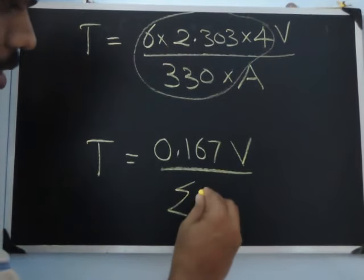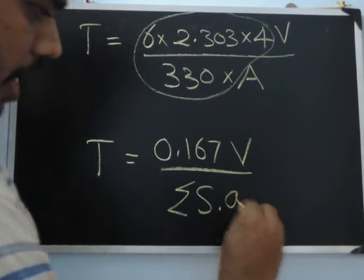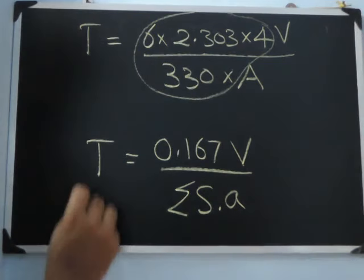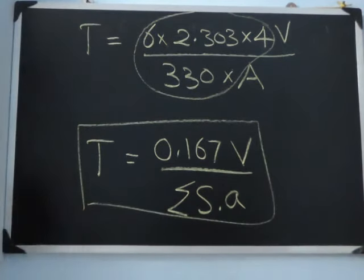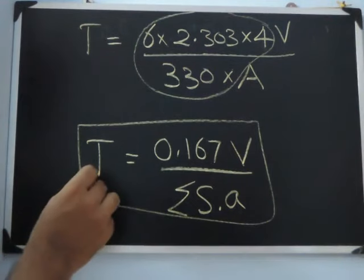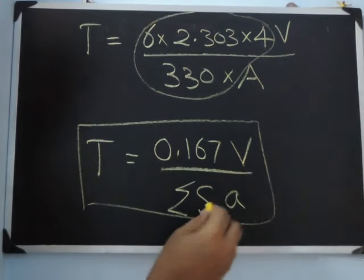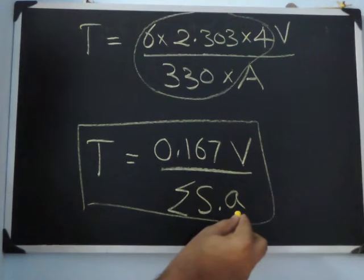If you remember, A is S into alpha. So this is Sabine's formula for the reverberation time of a hall. You can see that it depends on the total volume of the hall, the individual surfaces and their absorption coefficients.